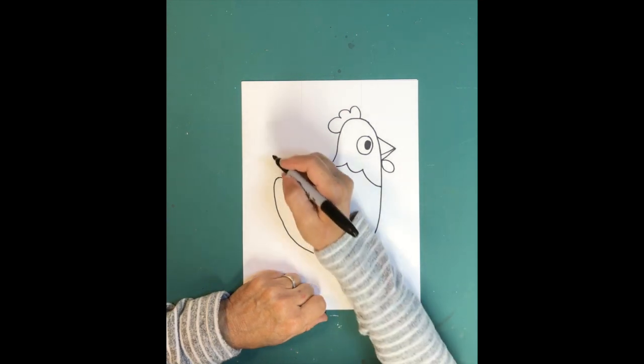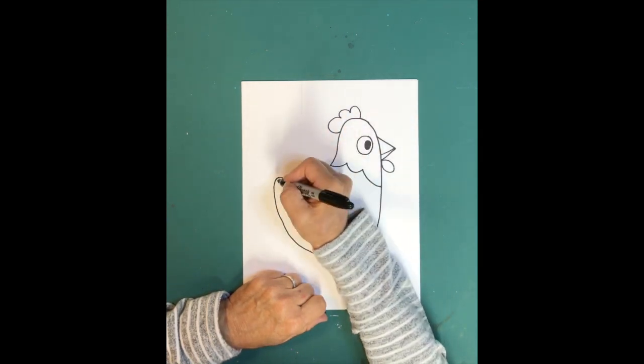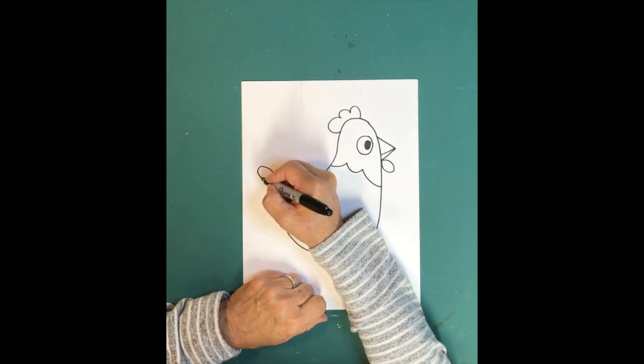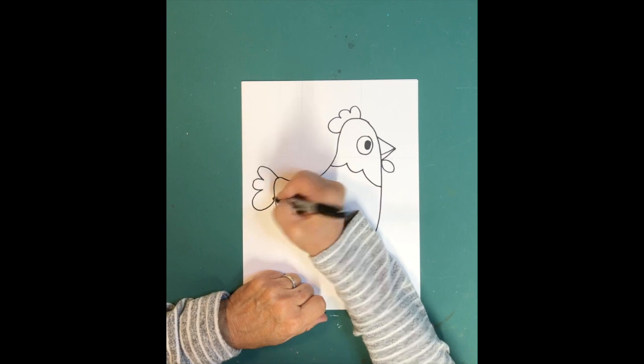Then we're going to give her a tail, and the tail is drawn just like this little crown here. Make it a little larger, so you can do some lines like that for her tail.